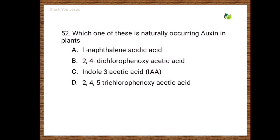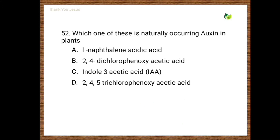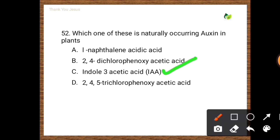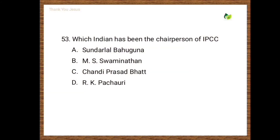Next question: Which one of these is a naturally occurring auxin in plants? Options are: L-naphthalene acetic acid, 2,4-dichlorophenoxyacetic acid, indole-3-acetic acid, 2,4,5-trichlorophenoxyacetic acid. The correct option is IAA — indole-3-acetic acid is a naturally occurring auxin.